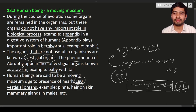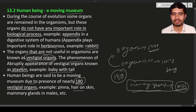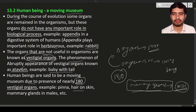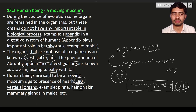Mammary glands are useful in females, but in males, even though they are not going to produce any child, mammary glands are still present. They are useless in males. Such organs present without any function are known as vestigial organs. Human beings are called a moving museum due to the presence of 180 such vestigial organs — examples include ear pinna, hair on the skin, and mammary glands in males.